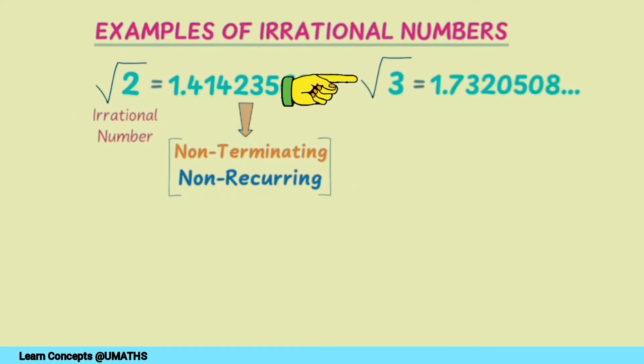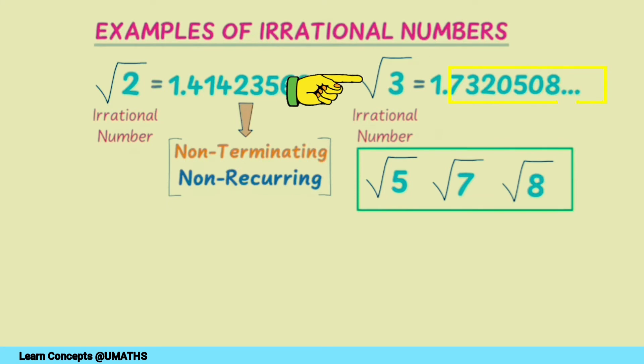You will get its value as 1.732050 and so on. Even the decimal is non-terminating and non-recurring. You can try calculating the values of √5, √6, √7, or √8. You will find that all of them result in non-terminating and non-recurring decimals.